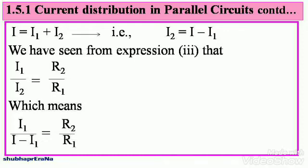We have seen from expression 3 that I1 by I2 equals R2 by R1. They are inversely proportional, which means when we substitute the value of I2, we get I1 divided by I minus I1 is equal to R2 by R1.